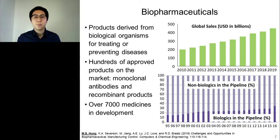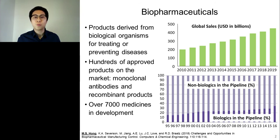To begin with, biopharmaceuticals, also widely known as biologics, are products derived from biological organisms for treating or preventing diseases. The global sales of biopharmaceuticals have continuously increased for many years and are projected to reach about $450 billion by last year. The percentage of biopharmaceuticals in the drug pipeline has also continuously increased, resulting in hundreds of approved products on the market, including monoclonal antibodies and other recombinant products, and over 7,000 medicines in development.